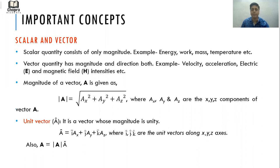Magnitude of a vector A is given as |A|, which is equal to square root of Ax² + Ay² + Az², where Ax, Ay, Az are the x, y, z components of vector A.